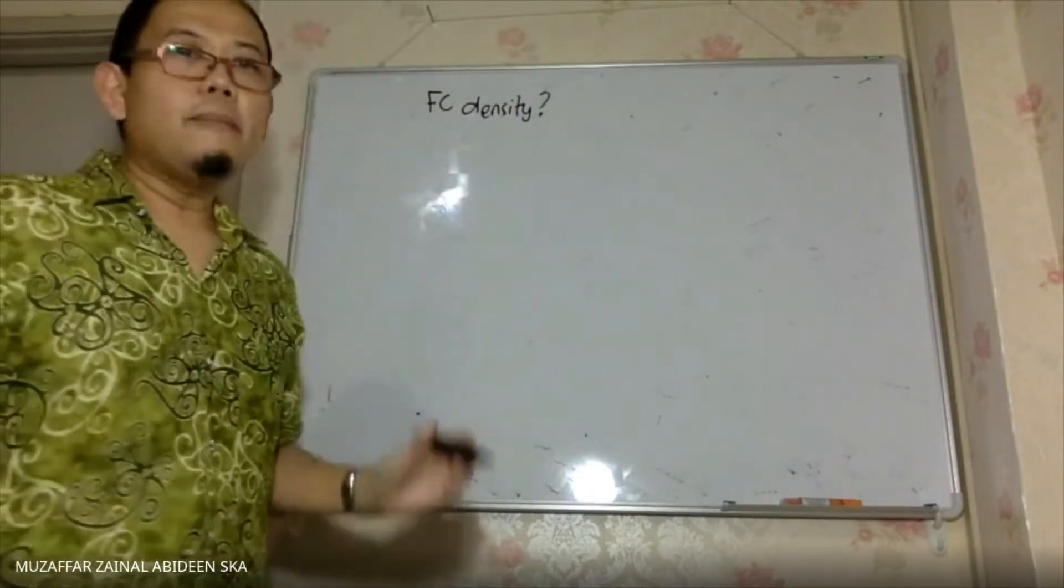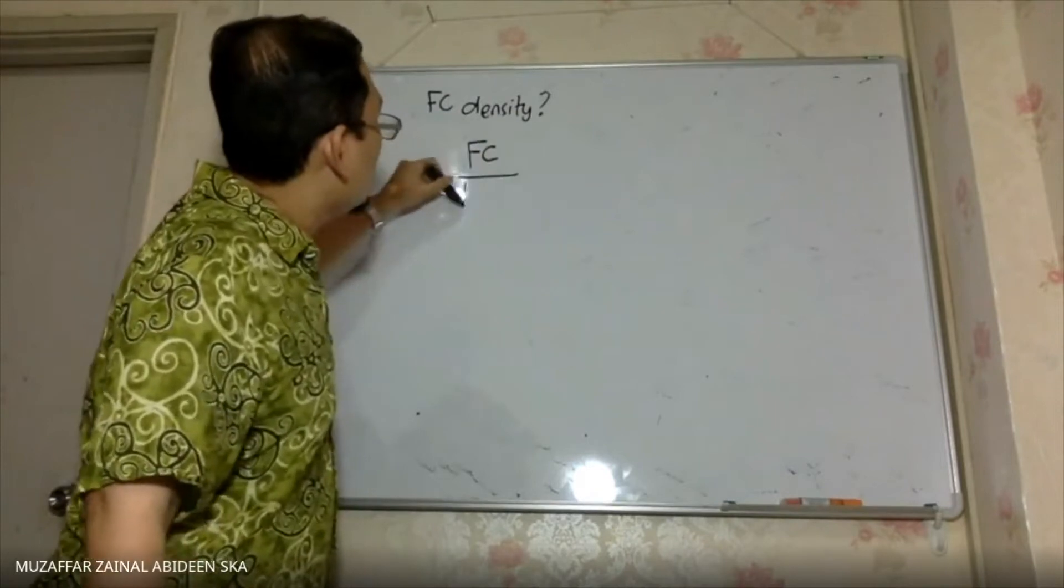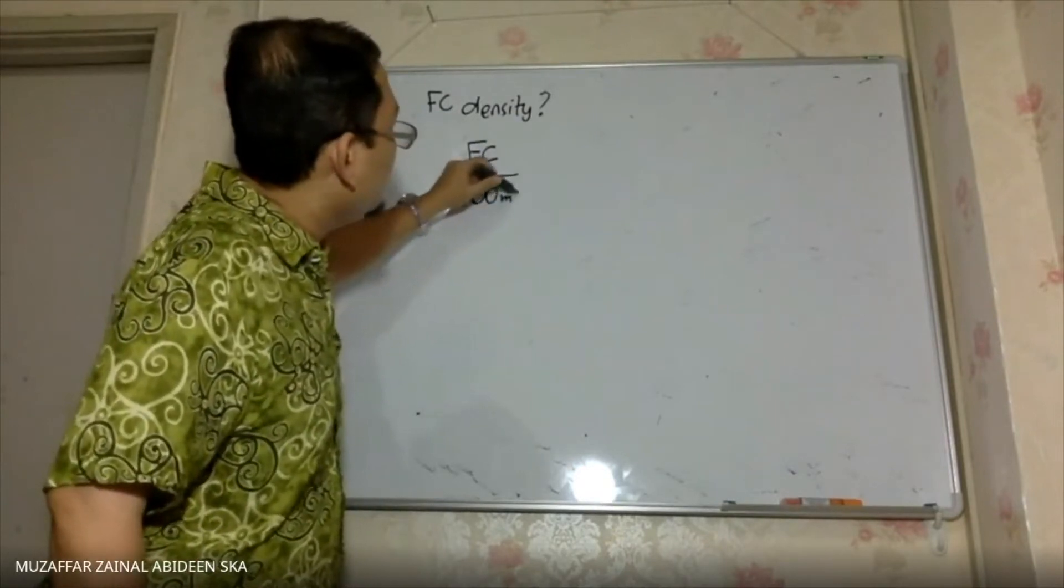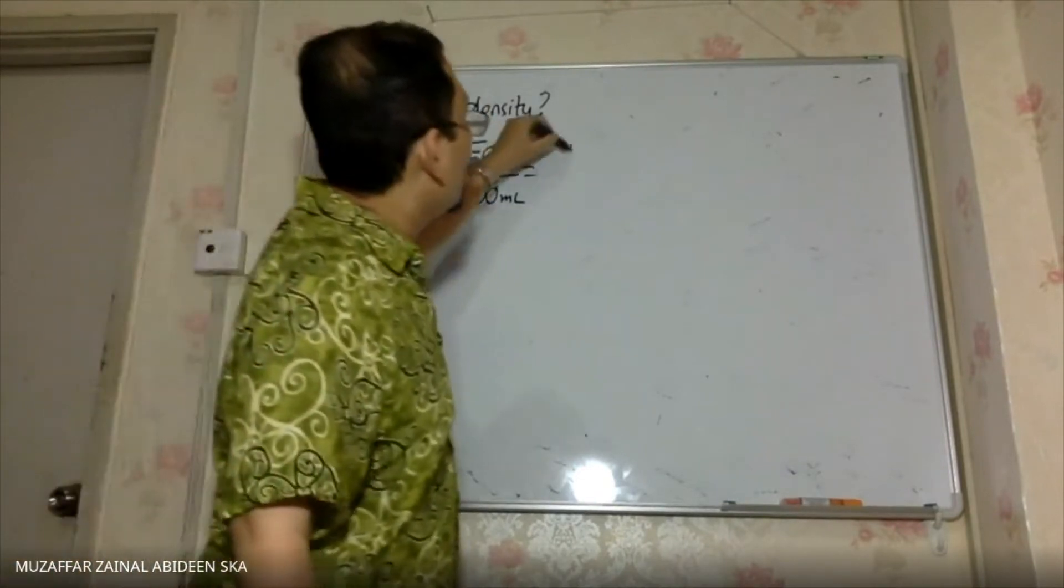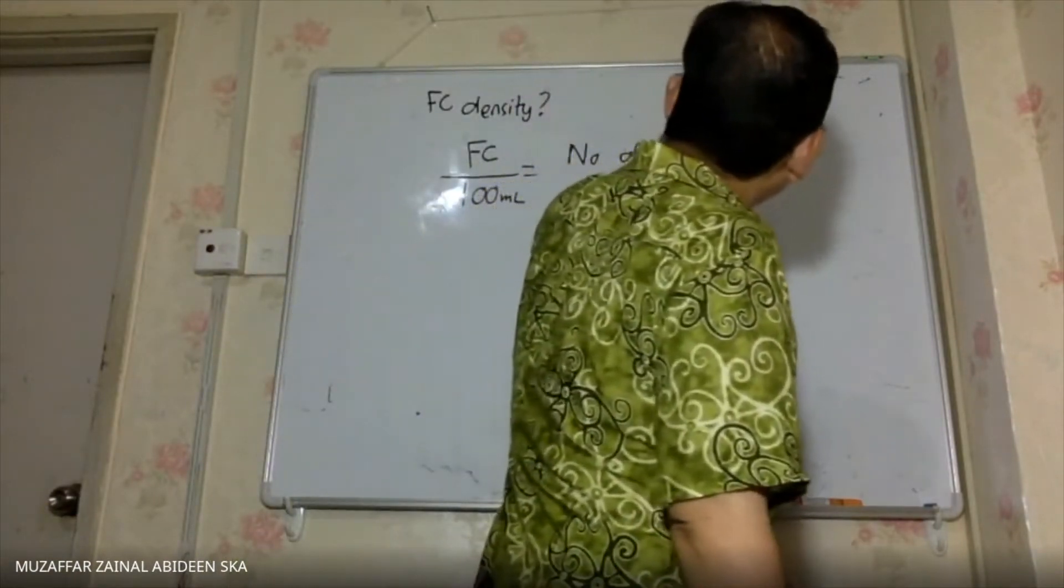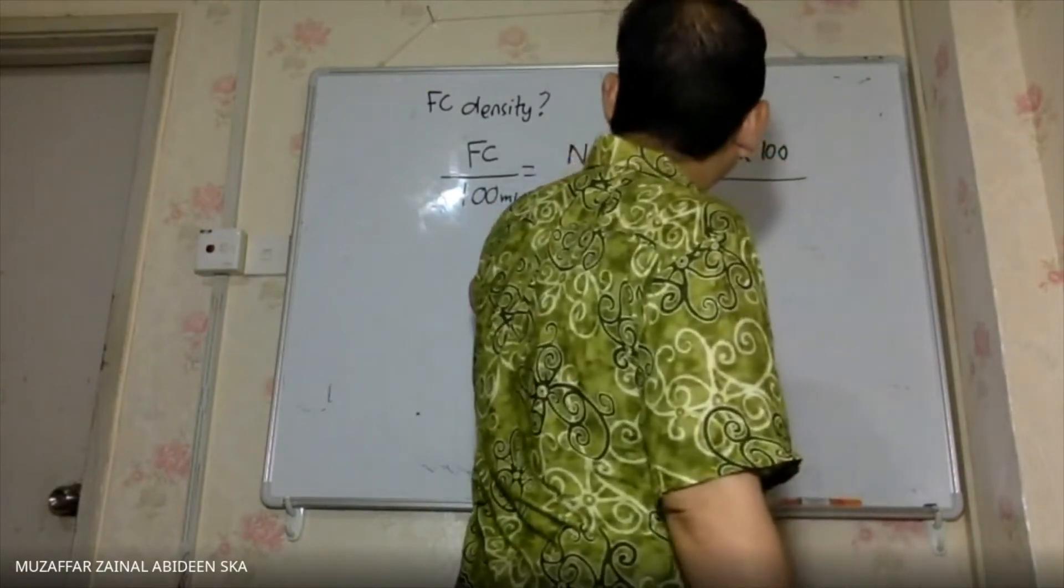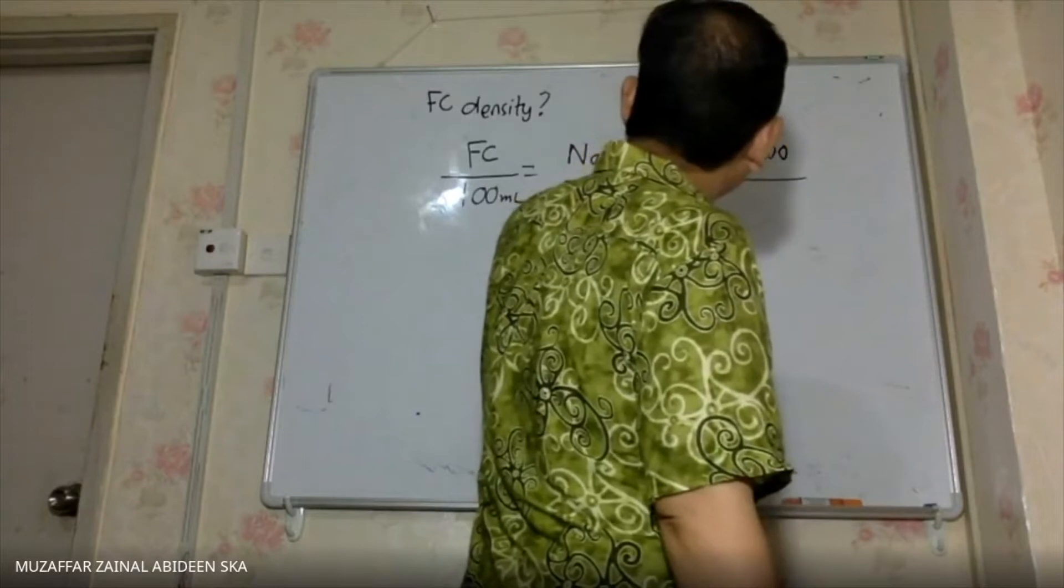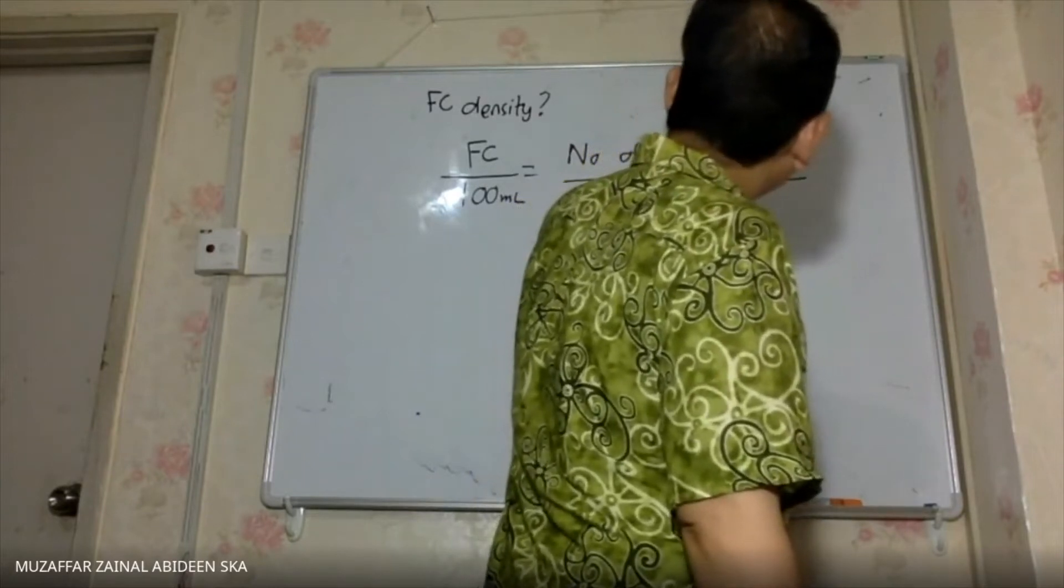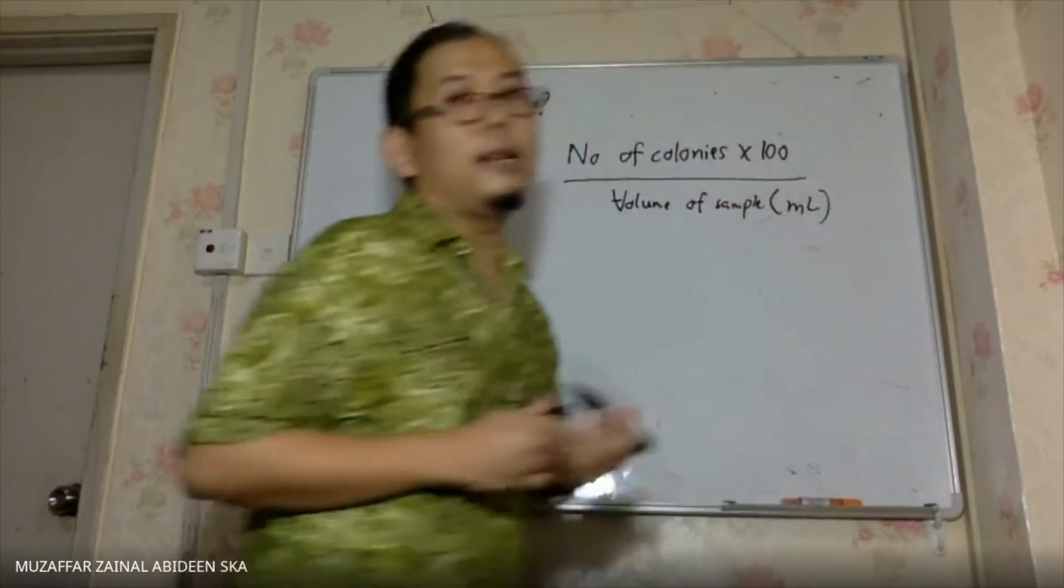Remember the formula: FC divided by 100 ml is equal to number of colonies times 100 divided by volume of sample. And the volume must be in ml, in milliliters.